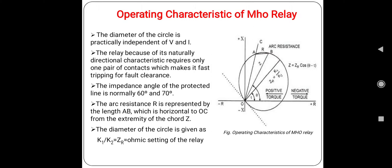The impedance angle of the protected line is normally approximately 60 to 70 degrees, which is shown by the line OC. This is the line OC. The arc resistance R represented by length AB is horizontal to OC from the extremity of the chord Z. This is the chord Z.